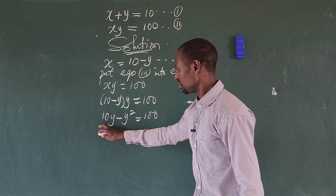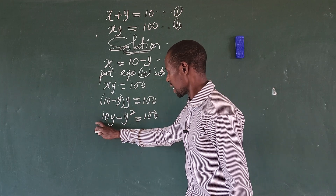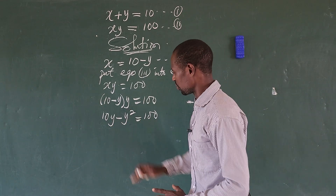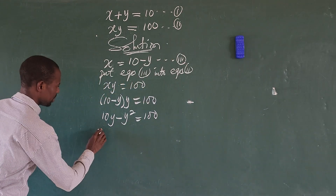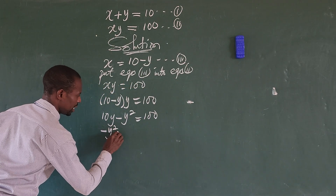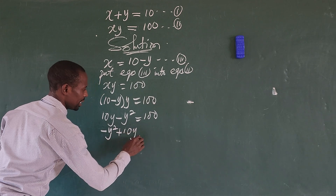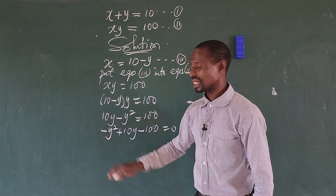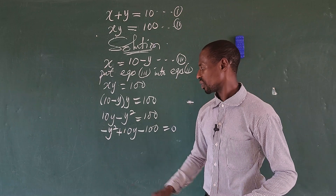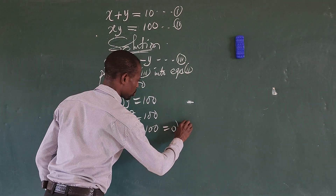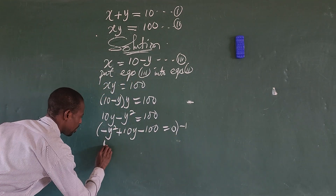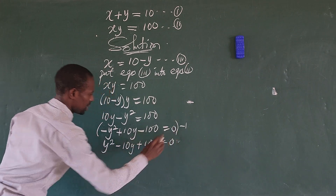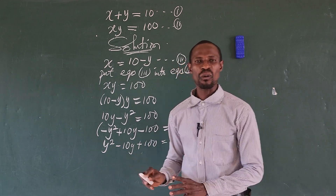We rearrange the system. To avoid multiplying through by minus one in steps, we rearrange to get minus y squared plus 10y minus 100 equals zero. Multiplying through by minus one gives us y squared minus 10y plus 100 equals zero. This is a quadratic equation.